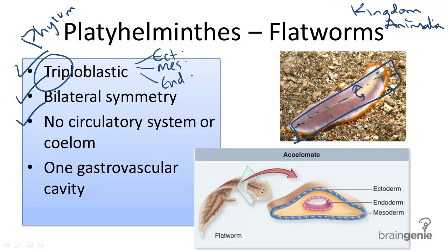Third, there's no circulatory system and there's no coelom or body cavity. And fourth, there's one gastrovascular cavity — nutrients come in the same passageway that wastes are excreted out of.